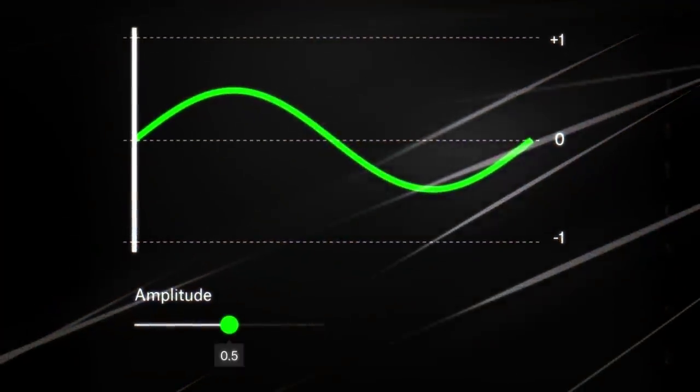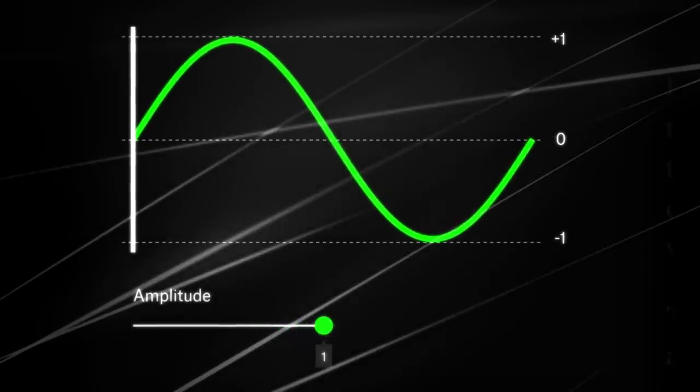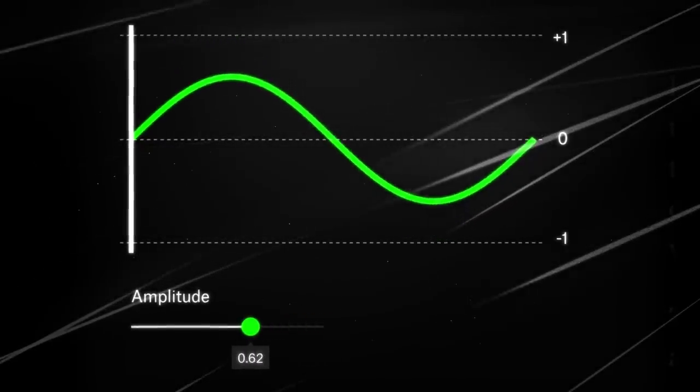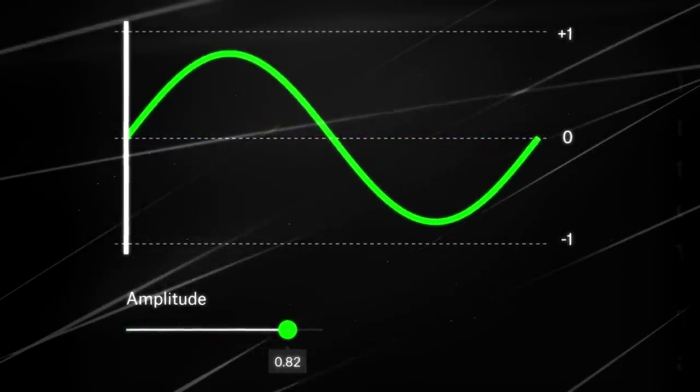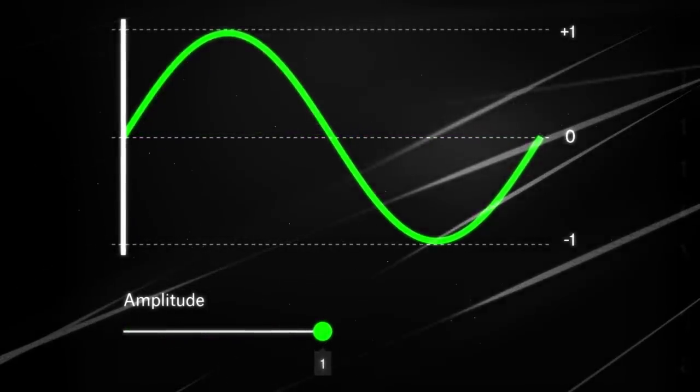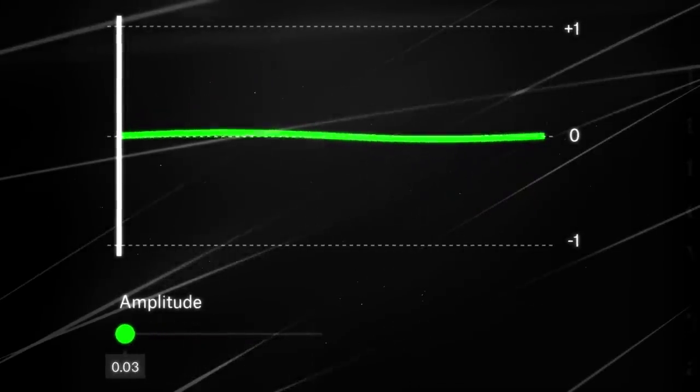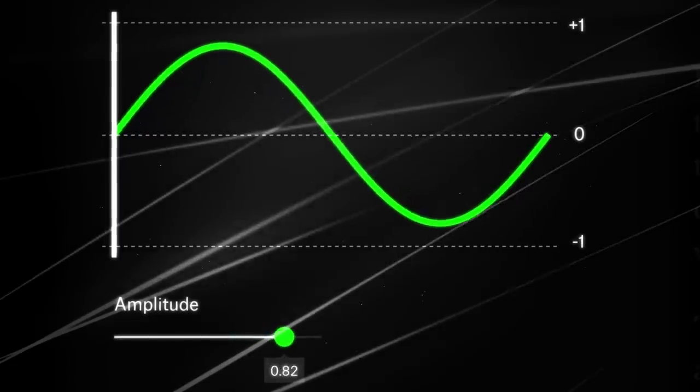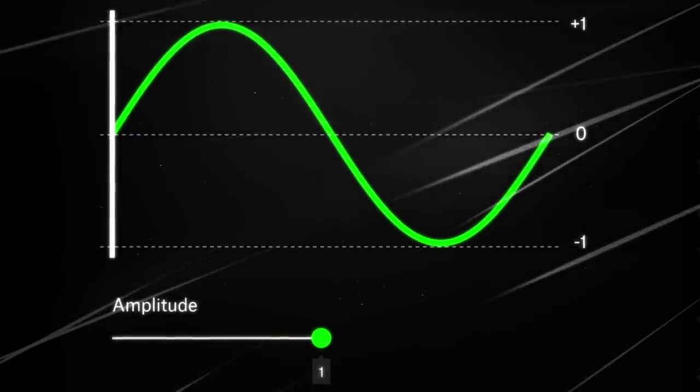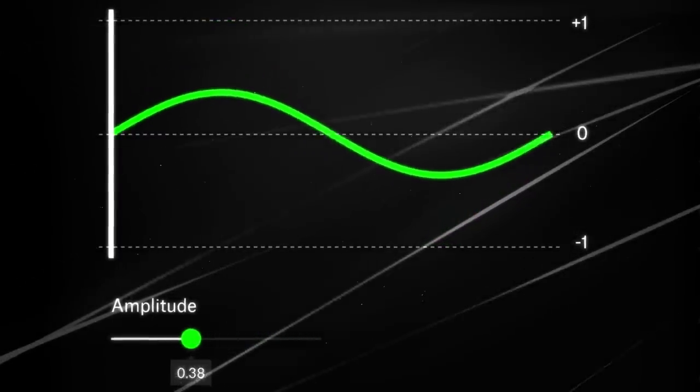Sound is created by vibration, and that vibration moves through the air in the form of a wave. Waveforms are abstract representations of these sound waves. We can measure how loud it is using the metric called amplitude. It measures how much a molecule is displaced from its resting position. The more the air molecules are displaced, the louder it seems to us.